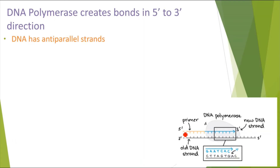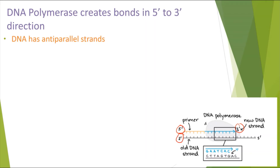DNA has anti-parallel strands, meaning on one side the strand runs from the 5' end to the 3' end, but on the other side it runs from 3' to 5'. So the two strands run in opposite directions — that is why DNA has anti-parallel strands.